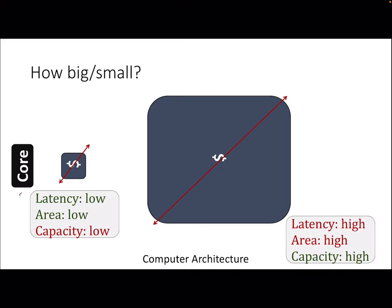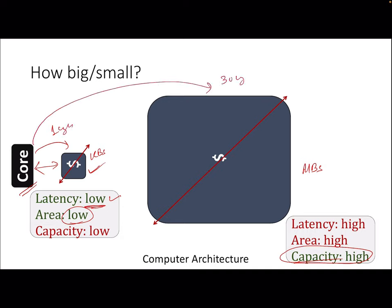The obvious question is: what should be the size of the cache closest to the processor? Remember, we are dealing with latency first — we can't wait hundreds of cycles for data. Latency is the first trade-off point, and higher capacity also takes more area. If you go for high capacity to avoid going to DRAM frequently, you might have a megabyte cache versus a kilobyte cache, but then latency gets affected — for example, one cycle for a small cache versus 30 cycles for a larger one. That's the trade-off a designer must deal with.